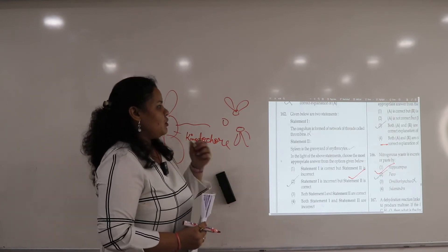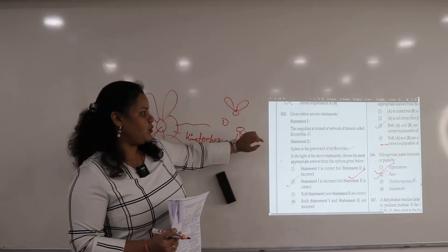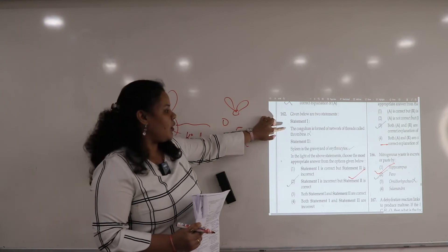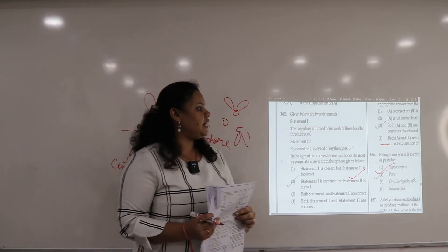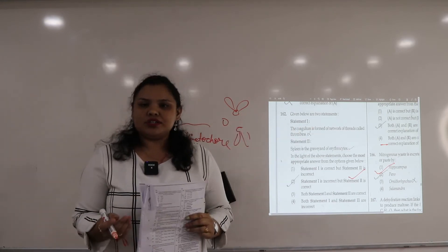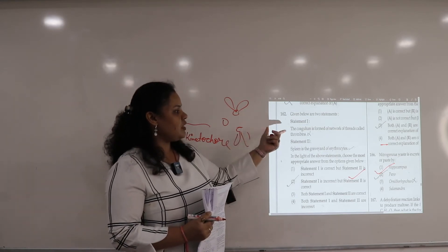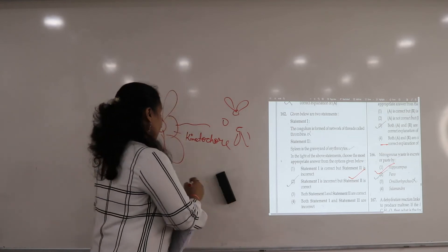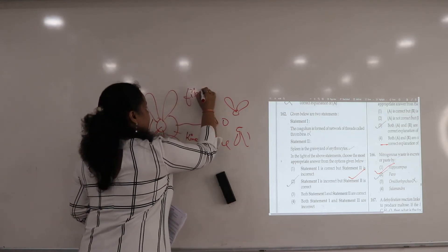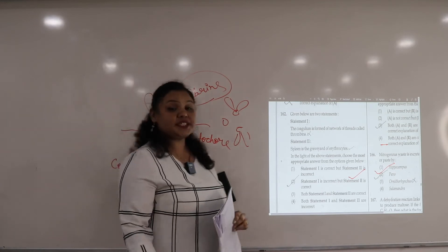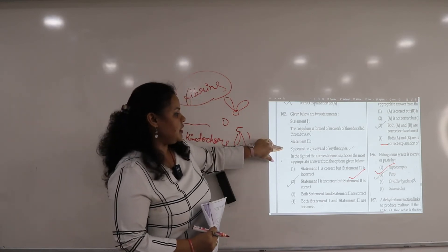Question number 162. Two statement question. Statement 1: the coagulum is formed of network of threads called thrombin. So it is not formed of thrombin. The coagulum is formed of network of fibrins. We read mesh work-like network, that is fibrins.